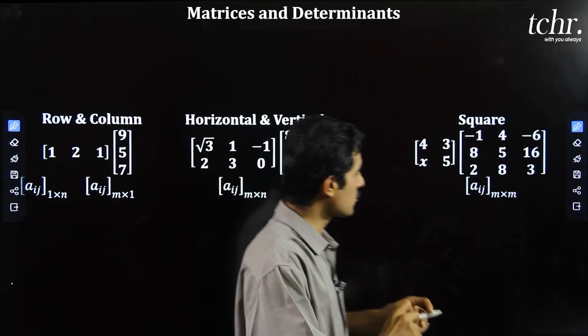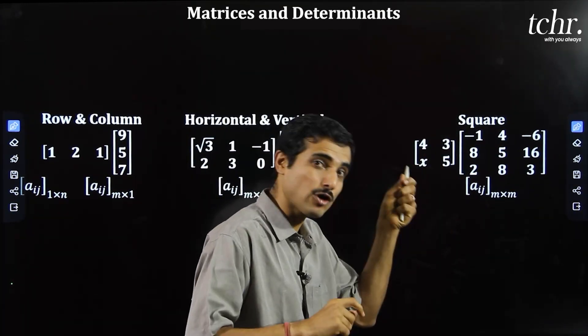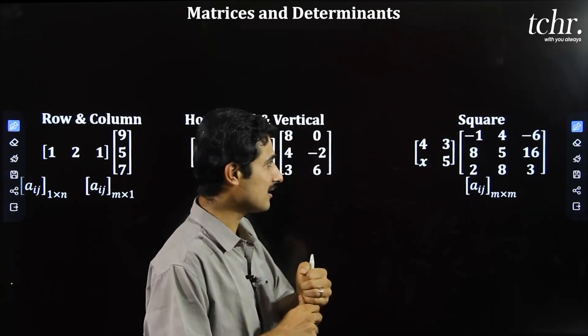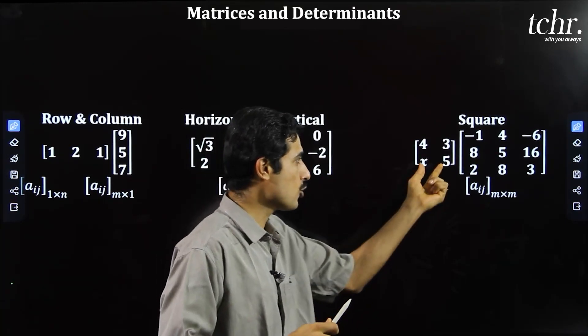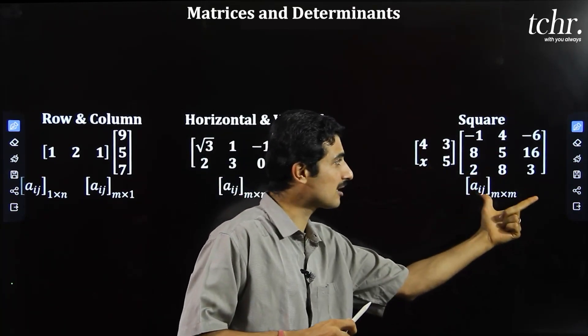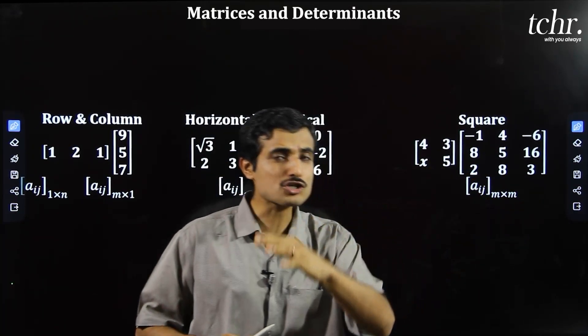Square matrix — number of rows equals number of columns. This includes 2 by 2 order, 3 by 3 order. Questions are asked on this.